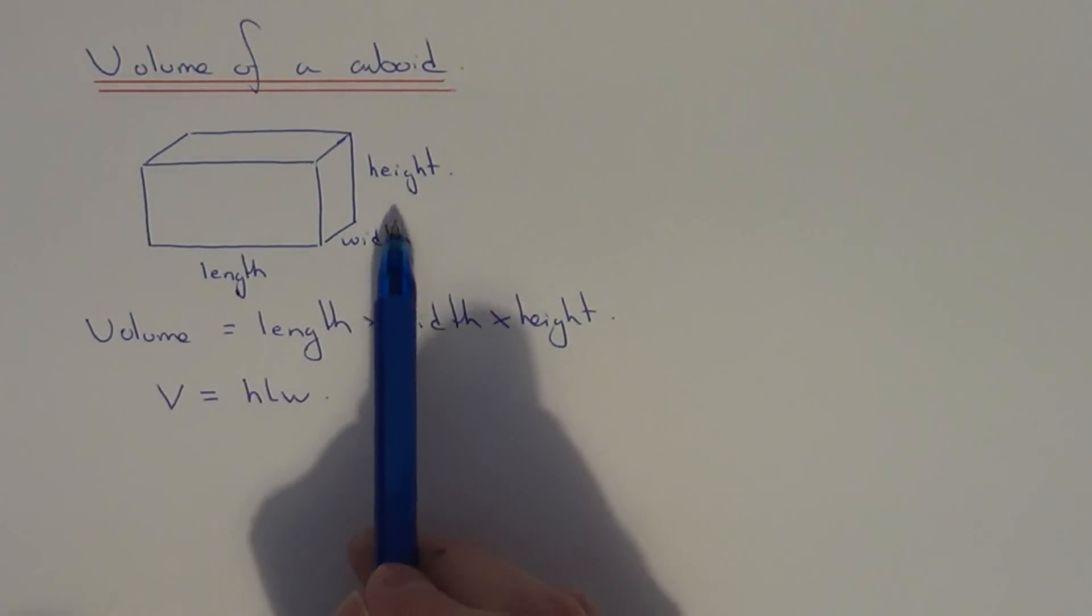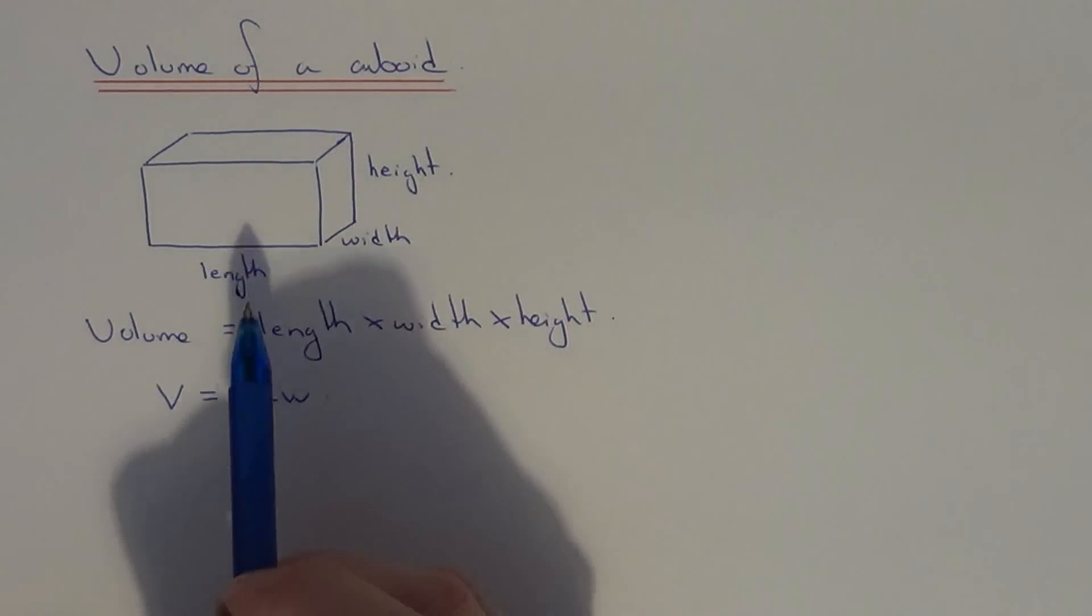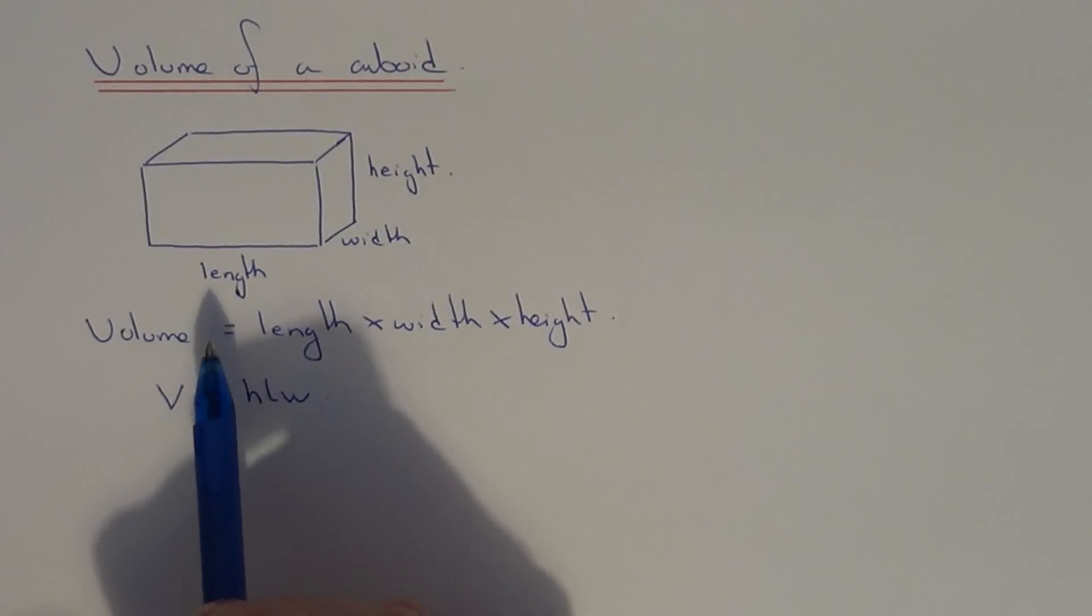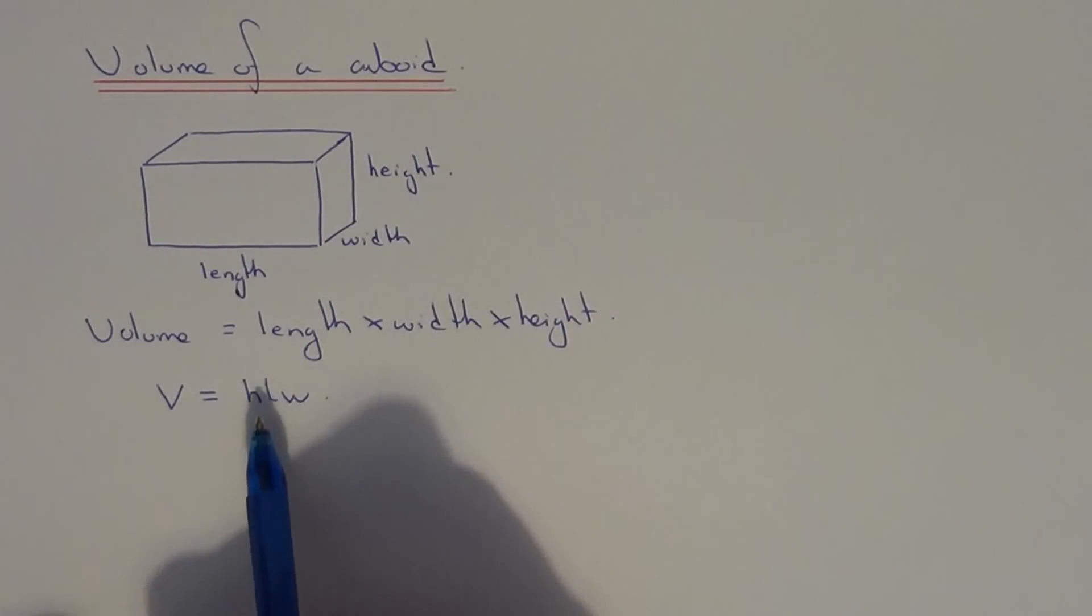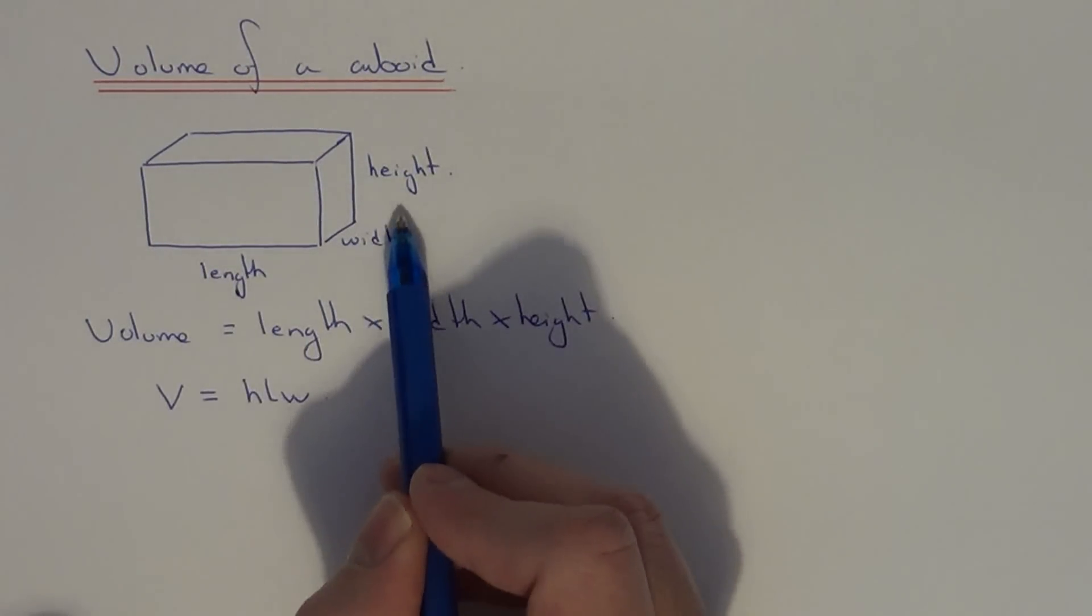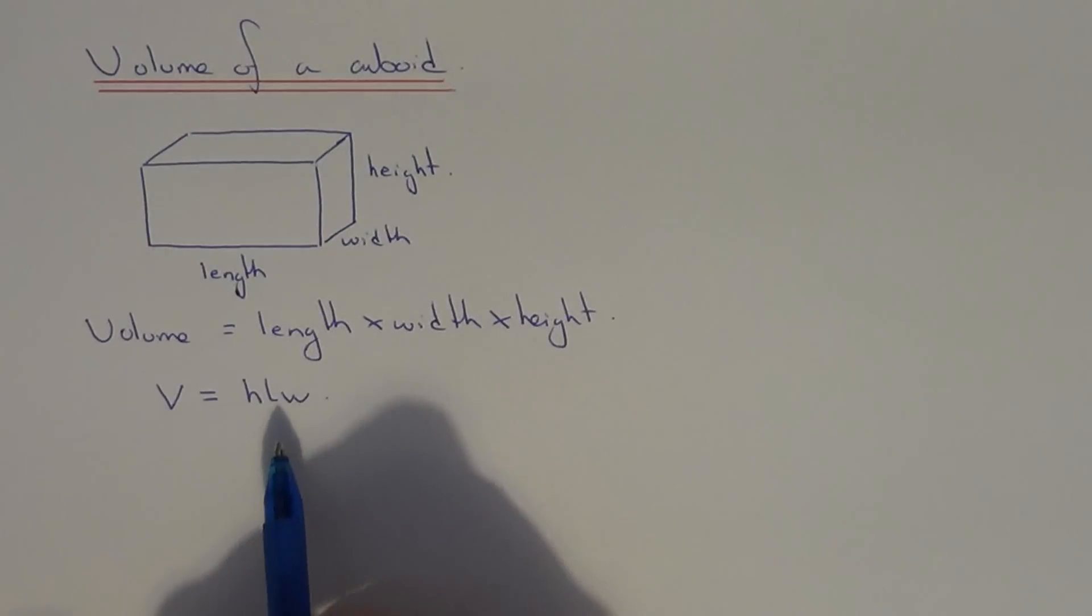If you know the length, width, and height of a cuboid, you can work out the volume by multiplying the length by the width by the height. All you need to do is multiply these three side lengths together. You can shorten this to the formula V equals HLW. Let's take a look at an example.